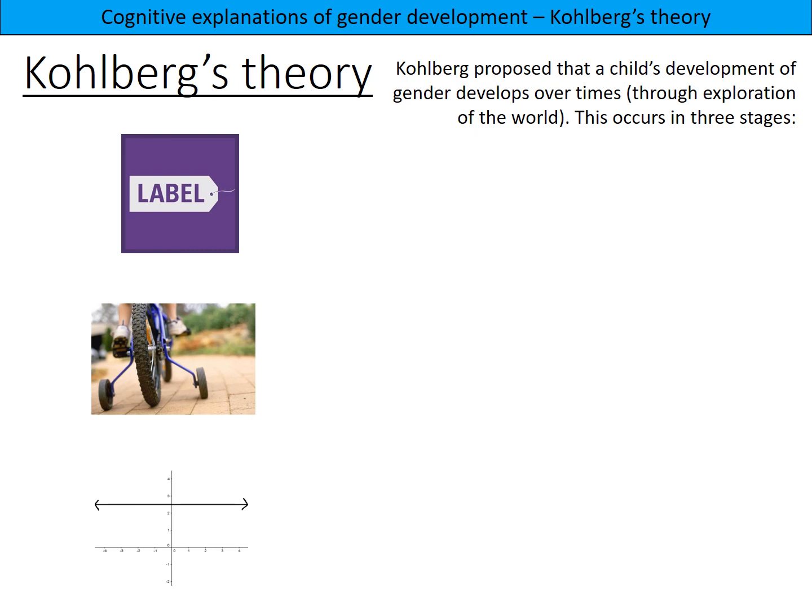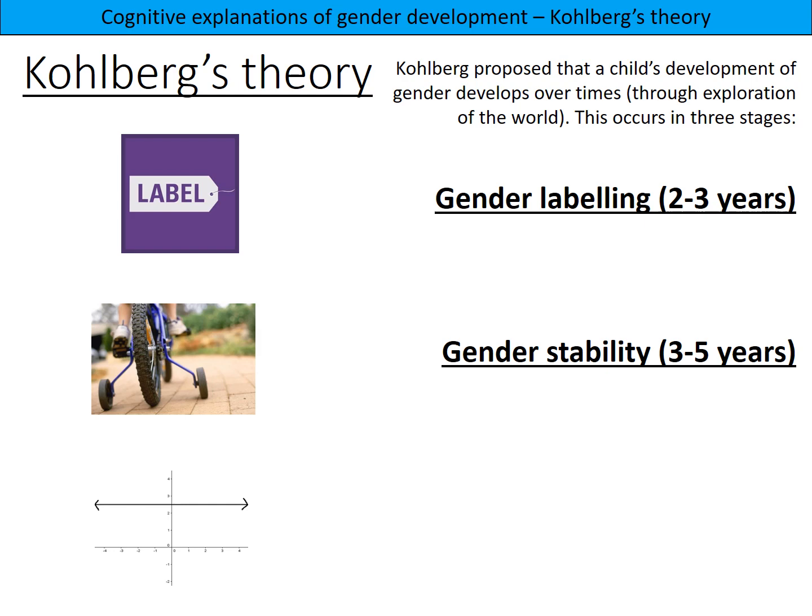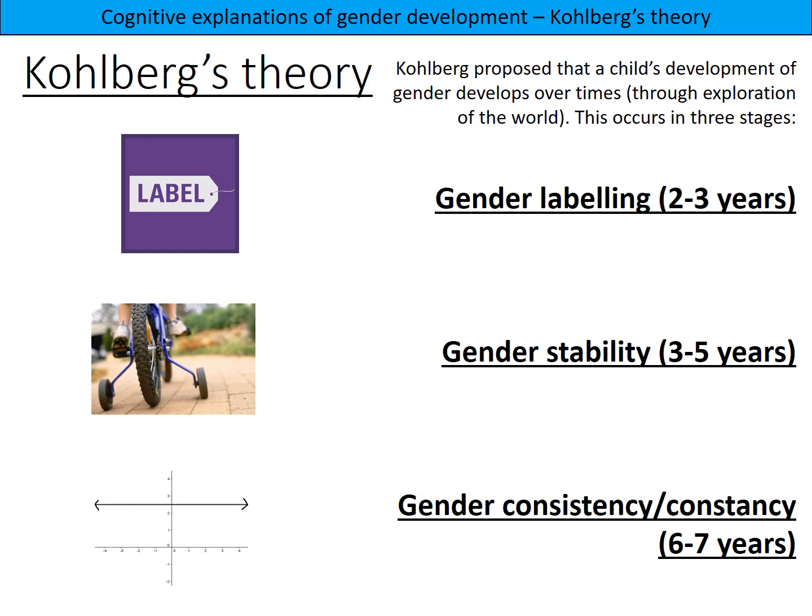Kohlberg proposed that a child's development of gender develops over time through exploration with the world, and he said this develops in three stages. The first stage is the gender labeling stage at two to three years old. The second stage is the gender stability stage at three to five years old. The third and final stage is gender consistency, or gender constancy, at about six to seven years old.